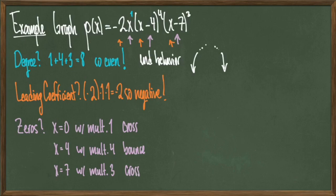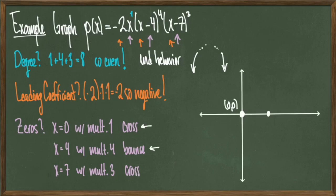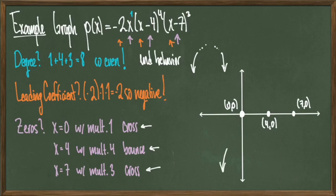Now I've got all the information I need so I can start filling in the picture. I'll draw my axes and plot the x-intercepts at (0, 0), (4, 0), and (7, 0). My end behavior tells me both left and right arrows point downward, so I'll start from the left, cross at (0, 0), bounce at (4, 0), cross again at (7, 0), and head downward — giving the final picture for p(x) = -2x(x - 4)⁴(x - 7)³.